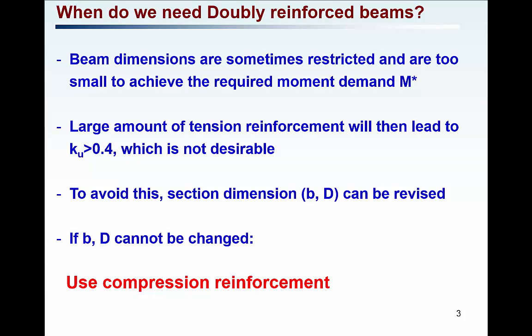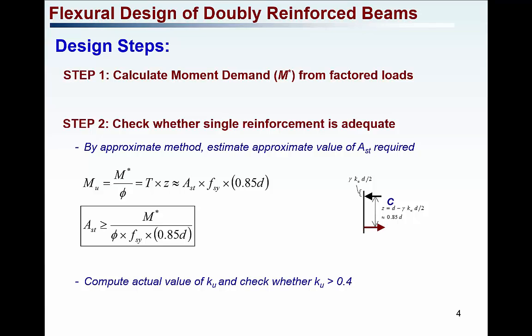To design the doubly reinforced beam when compression reinforcement is involved, these are the design steps to follow. The first step is to calculate the design moment from the factored load — calculate the factored load using all the load factors, then calculate the demand moment M*. The next step is to check whether a single reinforced beam is adequate, meaning whether you need compression reinforcement. Using the approximate method, estimate what tensile reinforcement is required to take this moment.